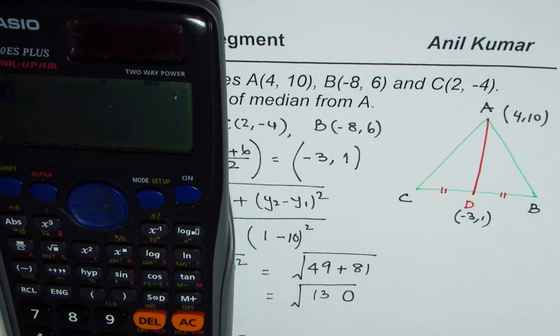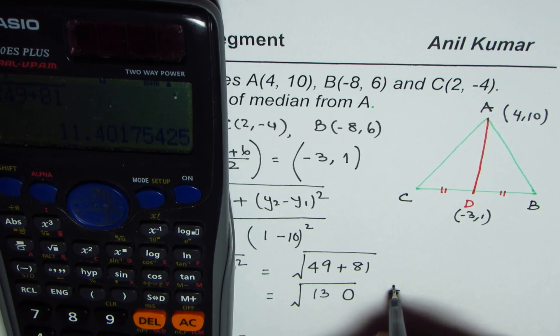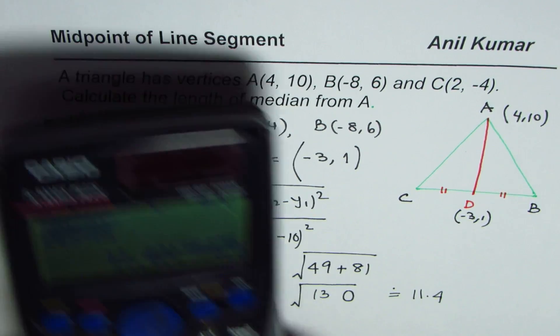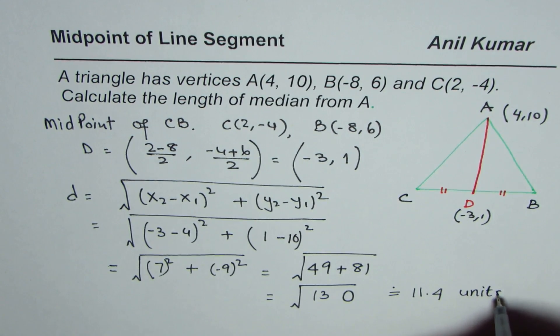So 49 plus 81 equals square root of 130, which is equal to approximately 11.4 units. It's good to write units since no units are given to us.